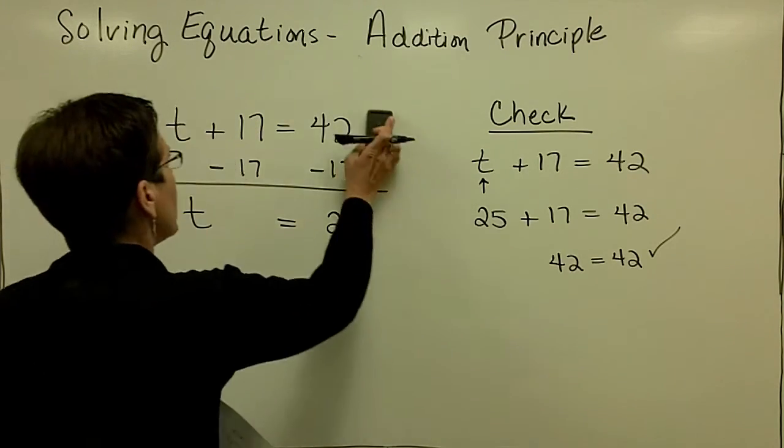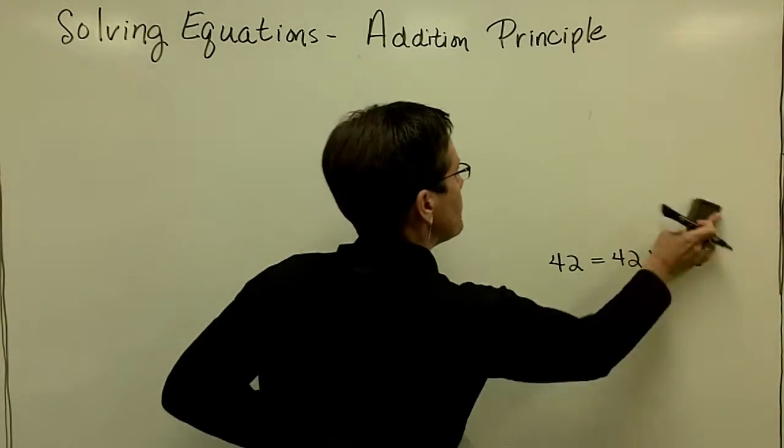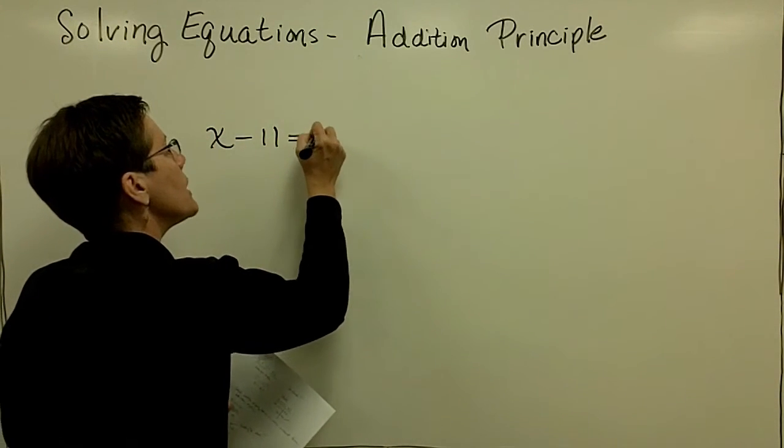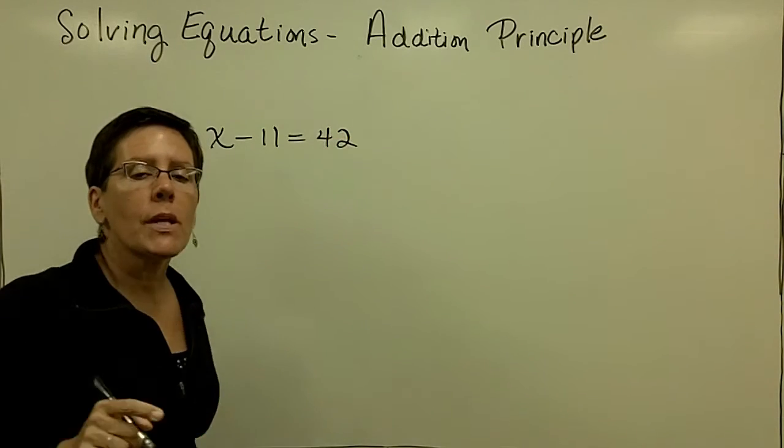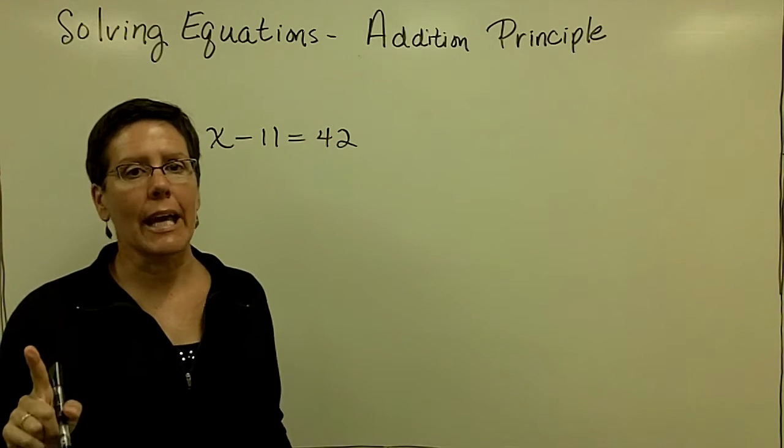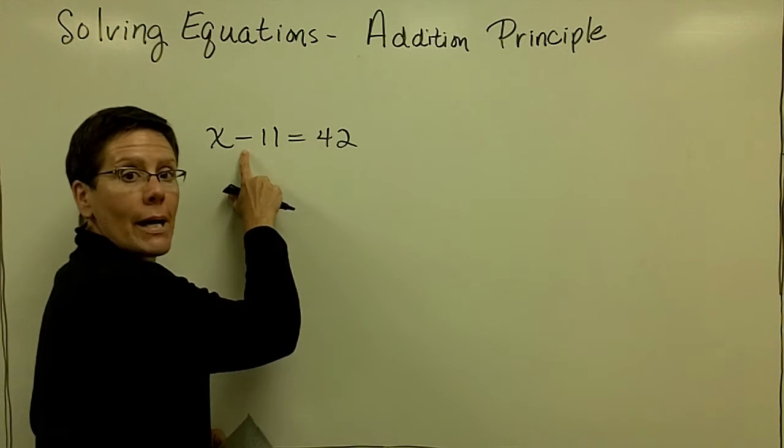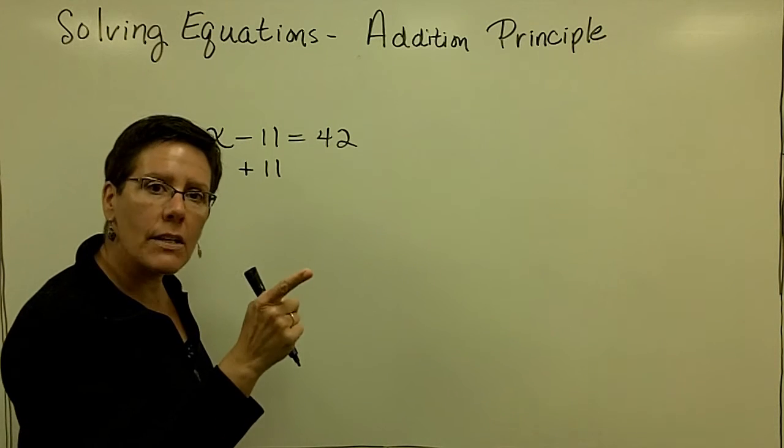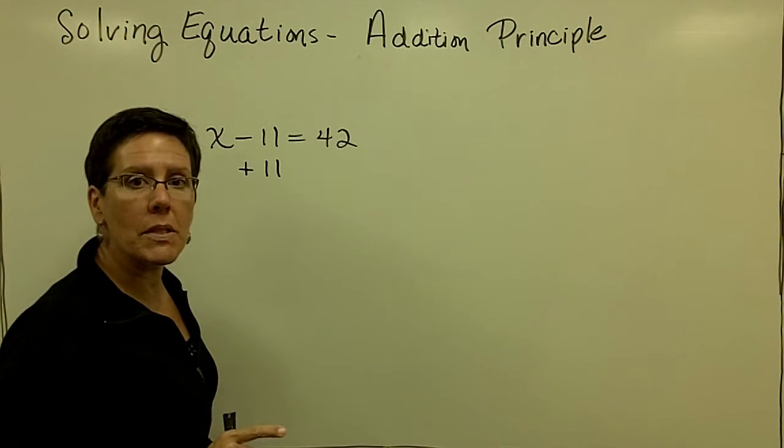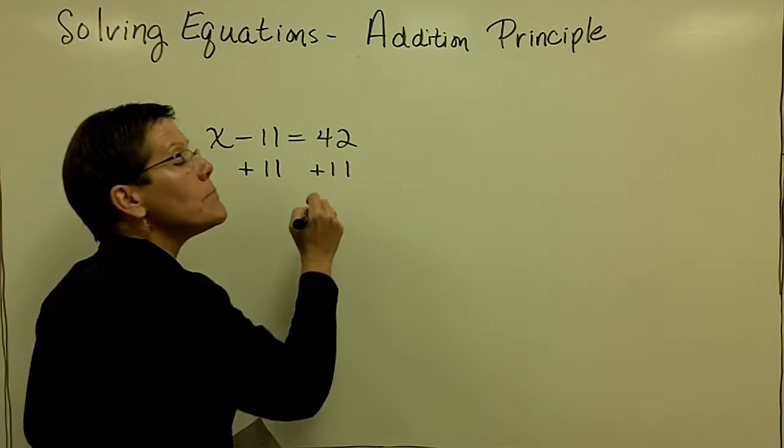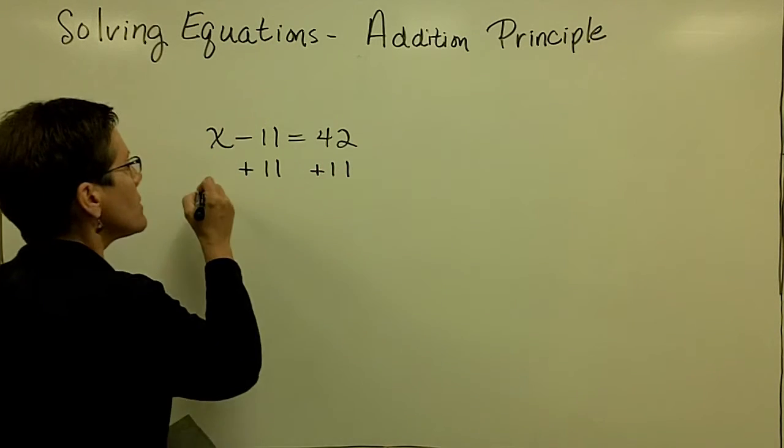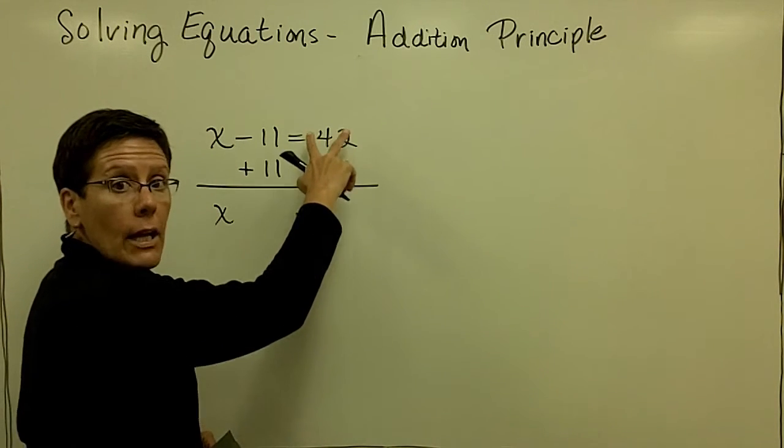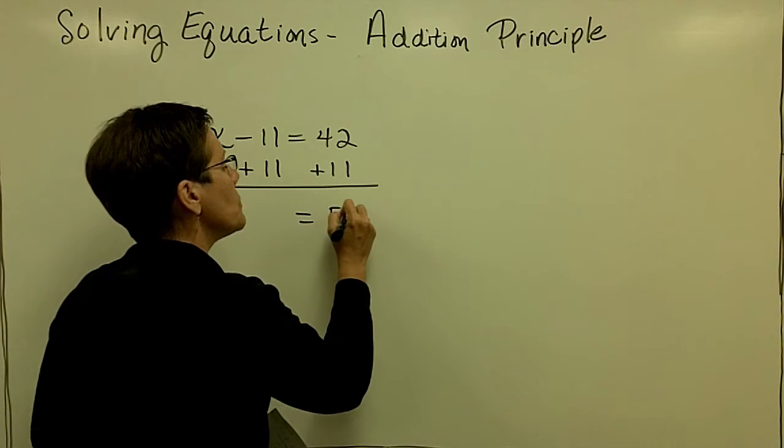Let's look at one where we might have to add something to both sides. So I've got x minus 11 equals 42, and I'm trying to isolate the variable x, I'm trying to get it alone. So right now there's a minus 11 with it. The way to get rid of a minus 11 is to add 11, because a negative 11 and a positive 11 add to be 0. But if I add 11 to one side, I've got to do it to the other side of the balance scale. And so finally I'm going to find out that x is equal to, I'll go ahead and add those two positive numbers, they add together to be 53.